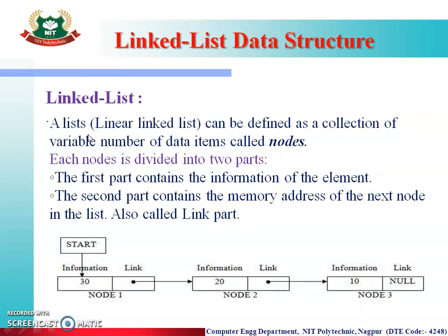Next is the linked list data structure, which is also a linear data structure. A linked list can be defined as a collection of a variable number of data atoms called nodes. The nodes are divided into two parts: the first part contains the information — the data to be stored — and the second part contains the link, which is the address to the next node. Data is accessed one after another in sequence, that is why it is called a linear data structure.